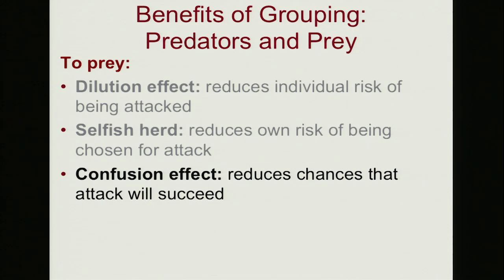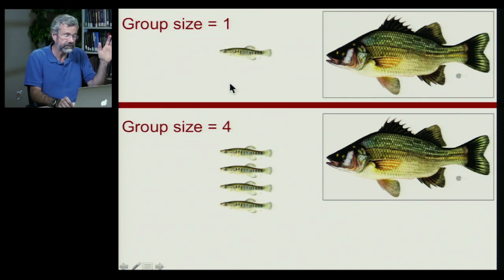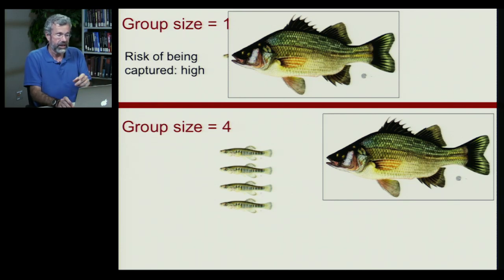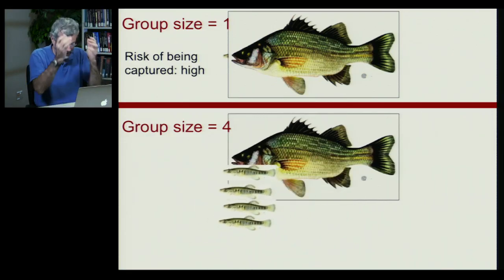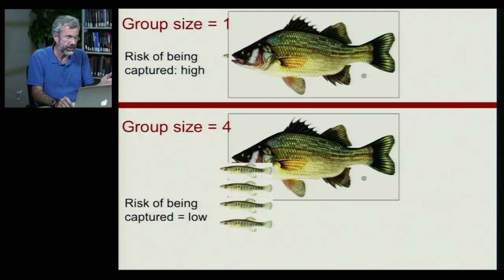Another way prey in groups reduce their chances of being captured is called the confusion effect. This assumes there will be an attack, but it might not succeed because the prey confused the predator. If a single fish makes an evasive maneuver, it's easy for the predator to keep its focus on that one erratic prey and catch it. But with four fish in a group all moving every which way, the predator can't focus — it's distracted — and the risk of being captured in an attack is much lower.